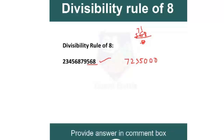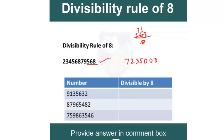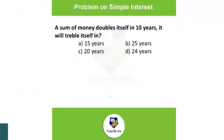There is one more rule: if the last 3 digits of a number are 000, it is also divisible by 8. For example, check 9135632 — the last 3 digits are 632; since 8 × 79 = 632, yes it is divisible. For a number ending in 482: 48 is divisible by 8 but remainder leaves 2, so no, it is not divisible by 8.